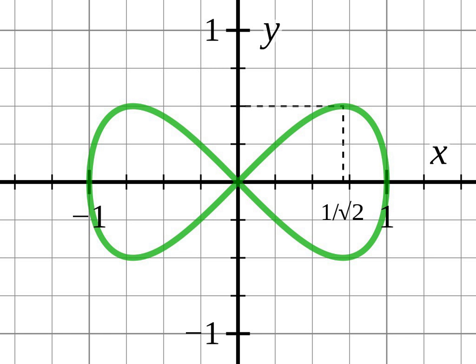He then observed that this spiral cannot be algebraic as it has an infinite number of intersections with a line through p, so the area cut off by a secant cannot be an algebraic function of the secant.